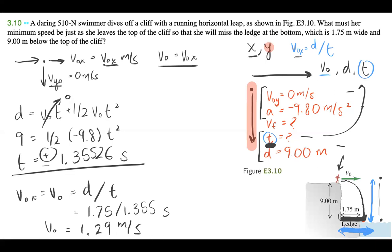That is our final answer. What must her minimum speed be just as she leaves the top of the cliff so that she'll miss the ledge at the bottom? Well, the minimum speed she needs to run at is 1.29 meters per second.